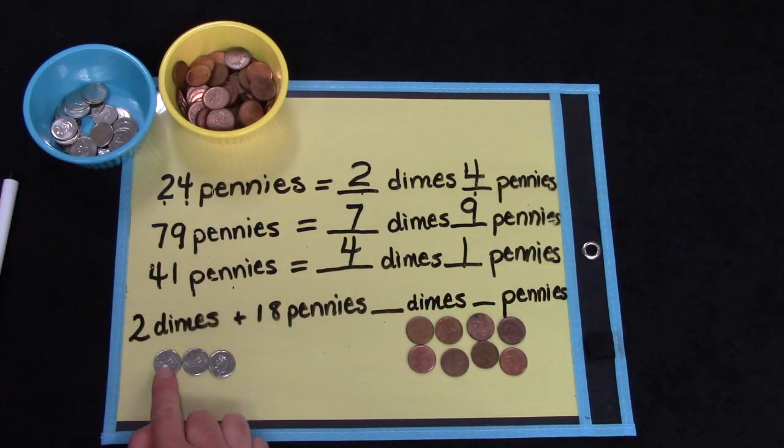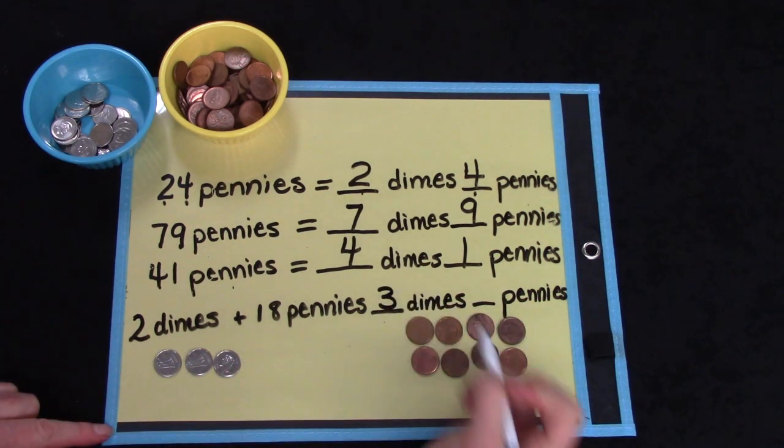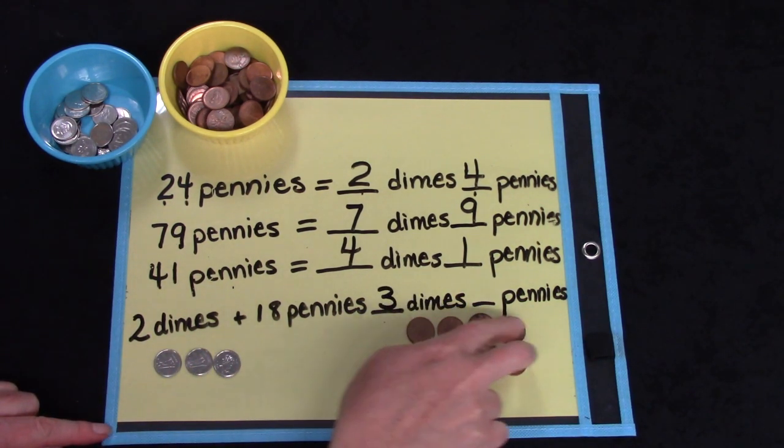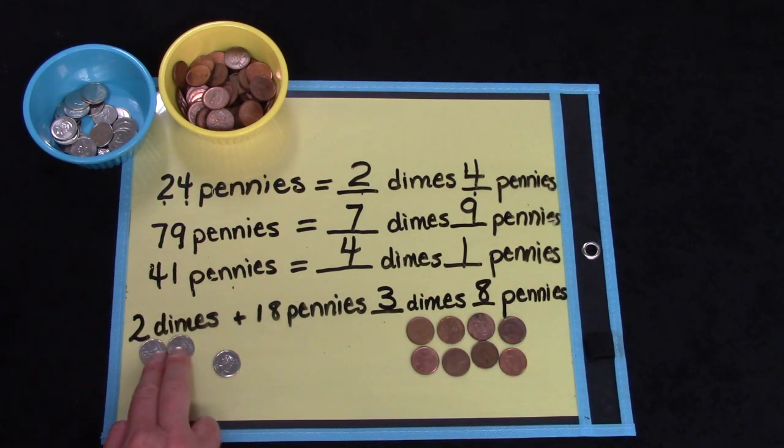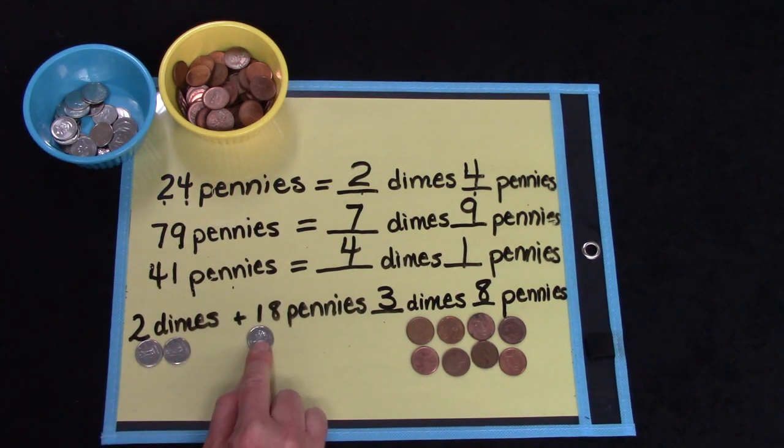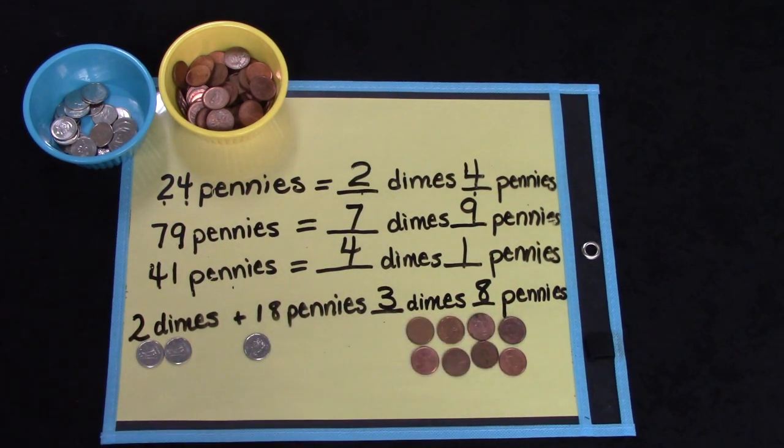And that would give us three dimes and 2, 4, 6, 8 pennies. Two of our three dimes are listed here under dimes. And the other dime is this one group of ten in our pennies. Two plus one is three dimes and eight pennies.